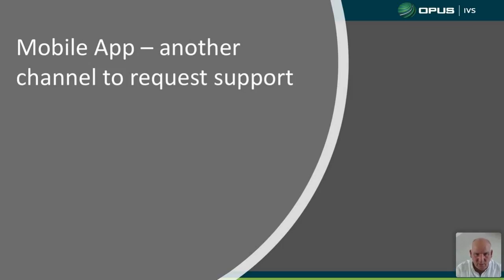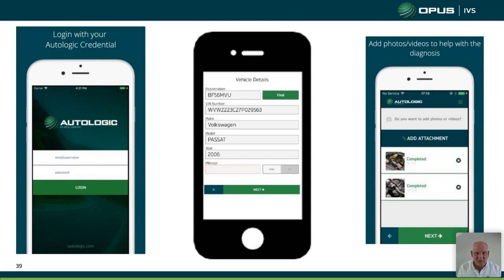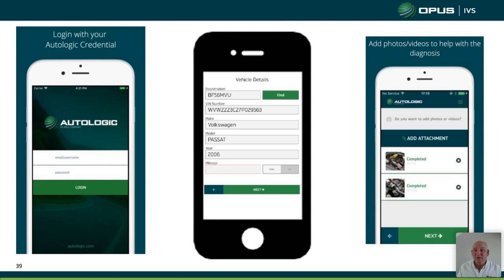Not everyone is aware that we have a mobile app. The app is available for both iOS and Android. You download it, enter your username and password, log in, and type in the vehicle registration number. It will produce the chassis number and model type. You can then send photographs — such as a picture of the chassis number — enter fault codes you're experiencing, and send that in. It goes straight into our CRM and a technician will call you back.